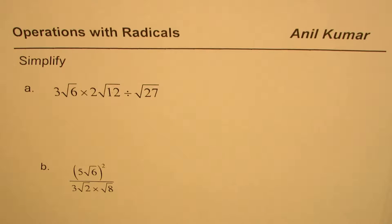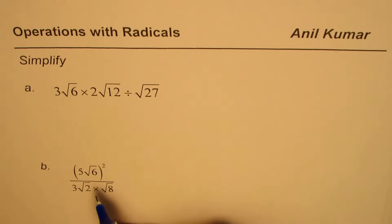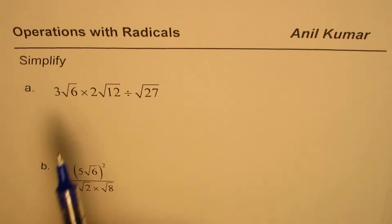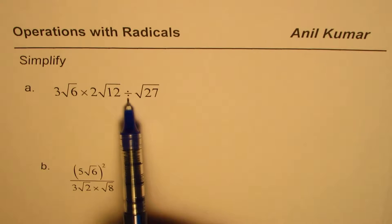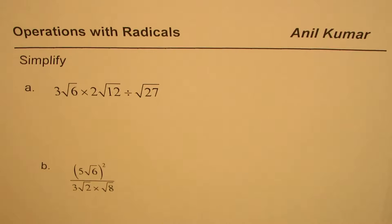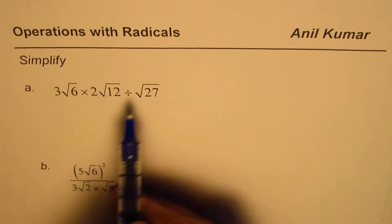I'm Anil Kumar. In this video we will learn how to multiply and divide radicals. We have two examples here. The first question is simplify 3√6 × 2√12 ÷ √27. The second one is (5√6)² divided by 3√2 × √8.